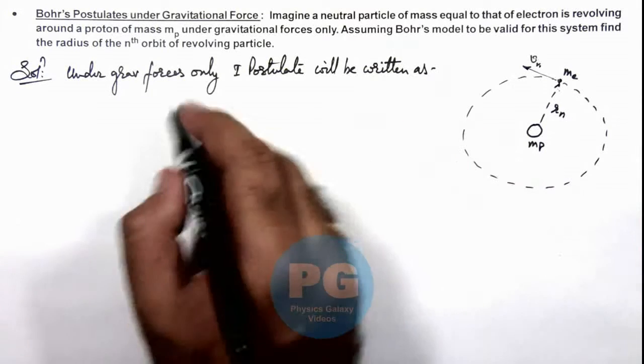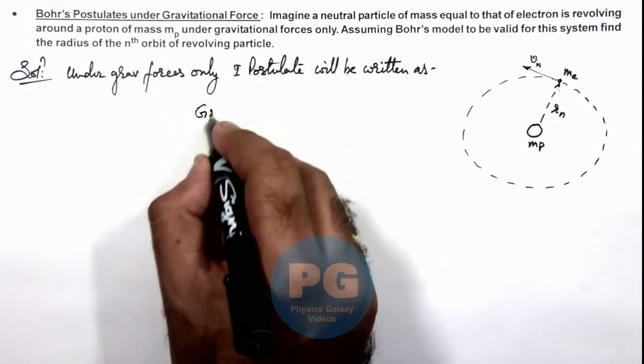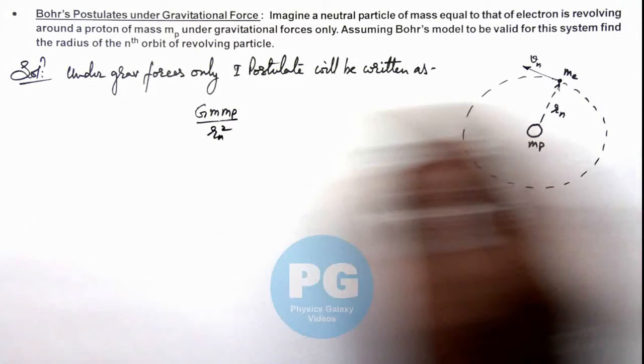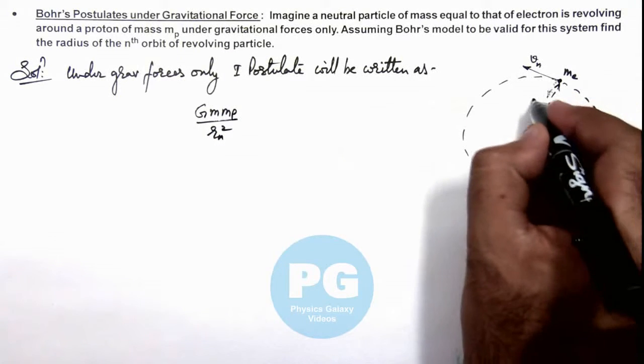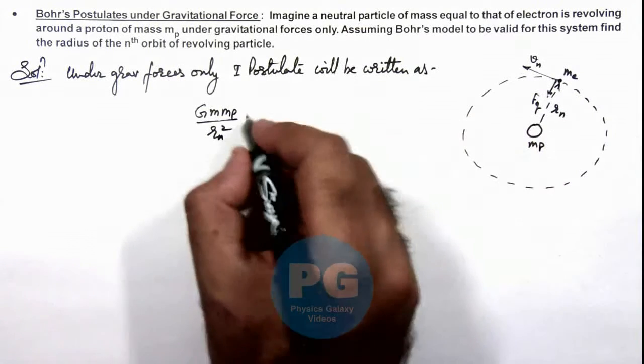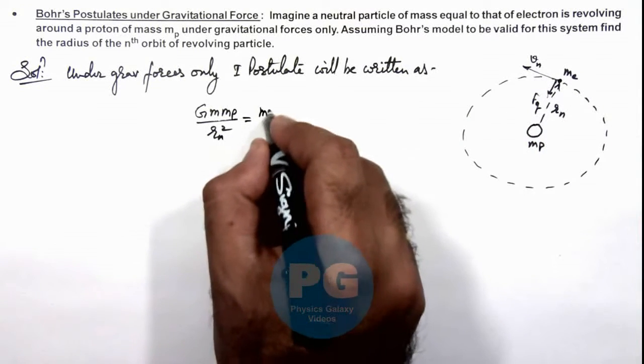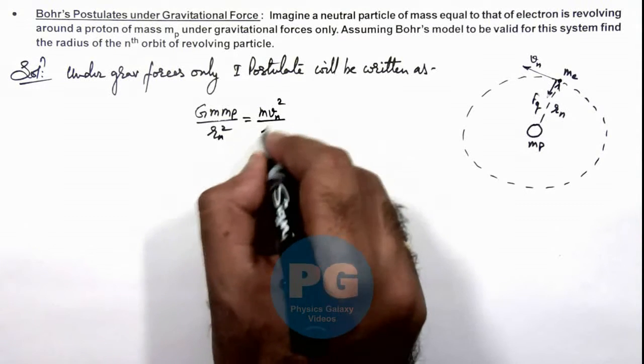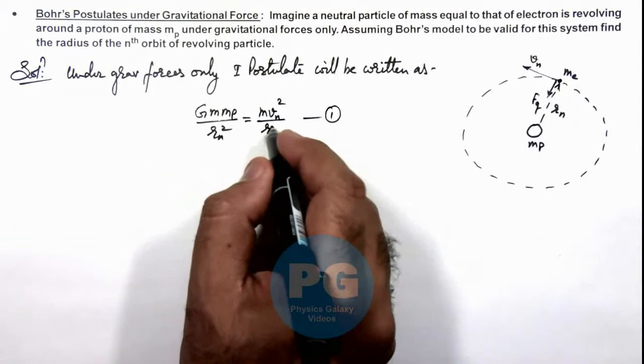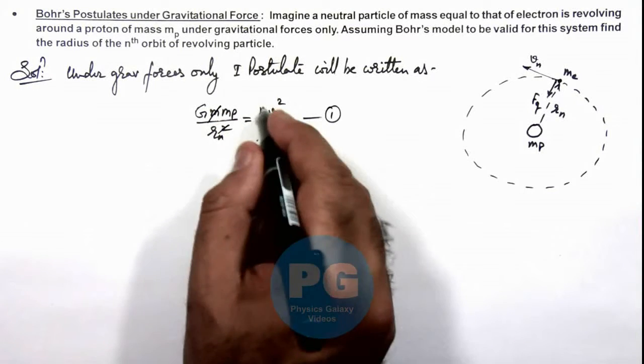So for the first postulate, we'll write the gravitational force G m mp by rn square, which is the gravitational force, will be balanced by the centrifugal force on it, which we write as m vn square over rn. This is our first postulate, where rn gets cancelled out and this m also gets cancelled out.